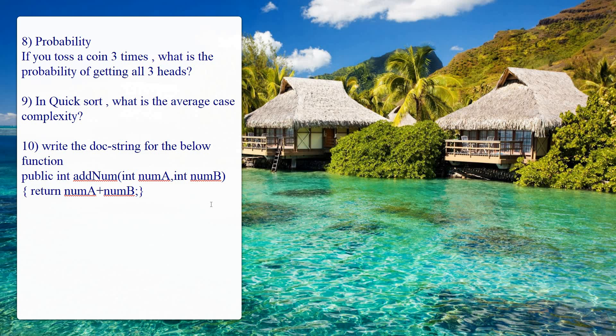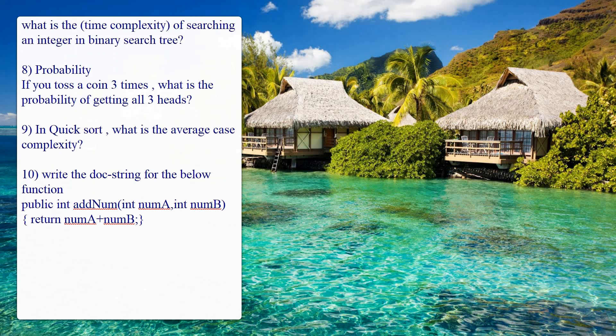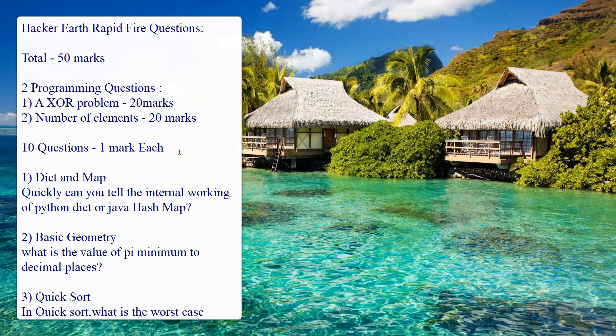The tenth question asks you to write the docstring for a given function: public int addNum(int numA, int numB) which returns numA + numB. A docstring means you explain what the function does — write that it takes two integer parameters, calculates their sum, and returns the result. In the approach, elaborate on the function's purpose and the return value.